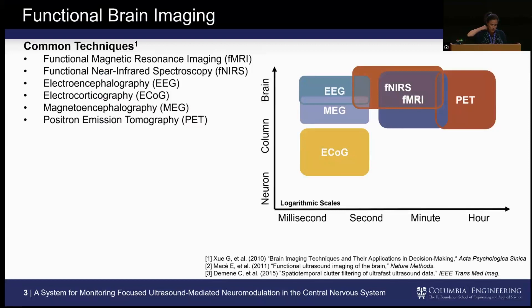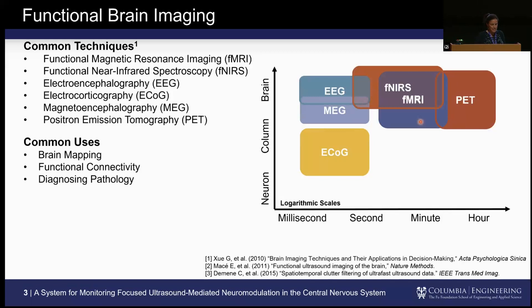First things first — functional brain imaging. There's a lot going on, and we are going after the brain. Typically you have to trade off spatial resolution with the temporal scale you're looking at. EEG, MEG, and ECoG have really super temporal resolution. PET is on the other side — whole brain but on the order of minutes to an hour. MRI is also on the order of minutes. With fMRI you can get a lot of information on cellular blood volume changes and flow itself. You can go from brain mapping with functional connectivity to diagnostic pathology. So what can ultrasound do?